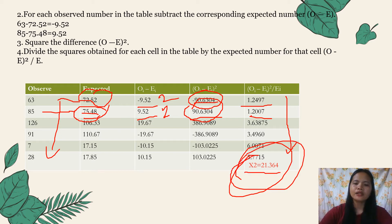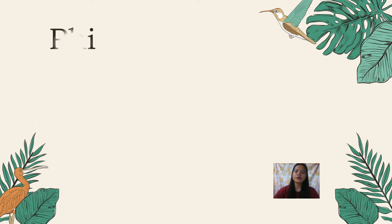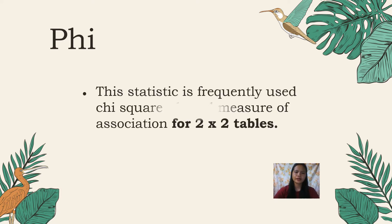After obtaining the chi-square statistic, we are now ready to calculate phi and Cramér's V. Phi is a frequently used chi-square-based measure of association for 2×2 tables — that is, tables with two rows and two columns.